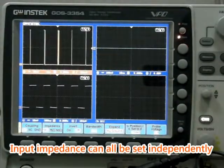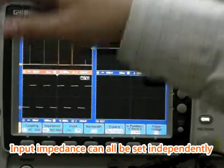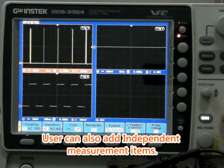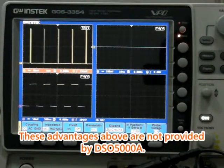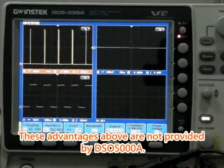Input impedance can all be set independently for each split window and users can also add independent measurement items. These advantages are not provided by DS-05000A.